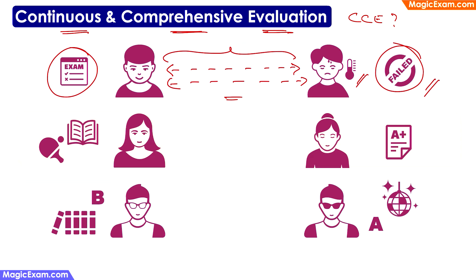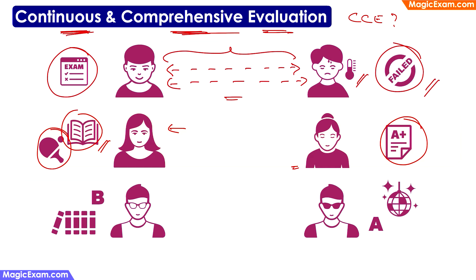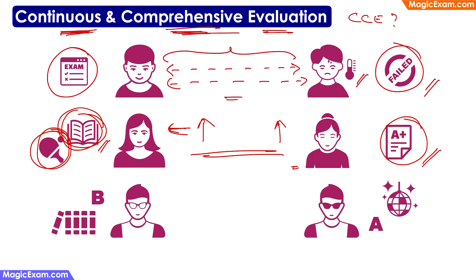Next, let's look at Sita and Gita. Sita not only studied but also participated in sports and extracurricular activities. Whereas Gita focused only on studies. If we look only at the final exam, maybe Gita gets better marks and Sita gets lesser marks — we are looking at only academic performance. But if we were to use continuous and comprehensive evaluation, we would give weightage to not only academic concepts but sports and extracurriculars as well. Then both Sita and Gita would have been rated equally rather than just focusing on academic evaluation.